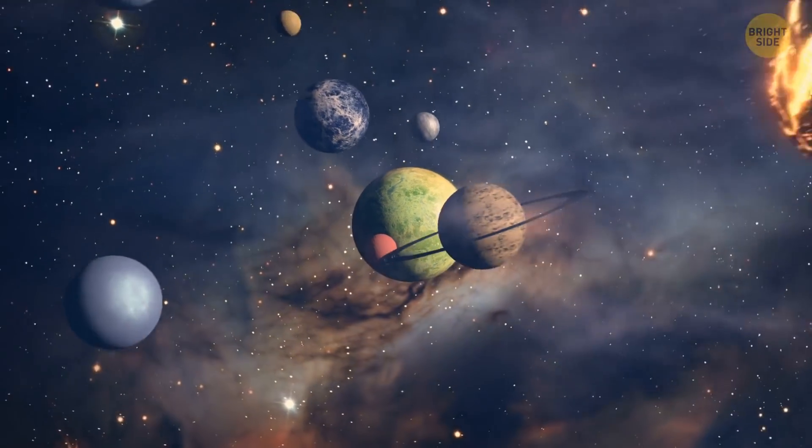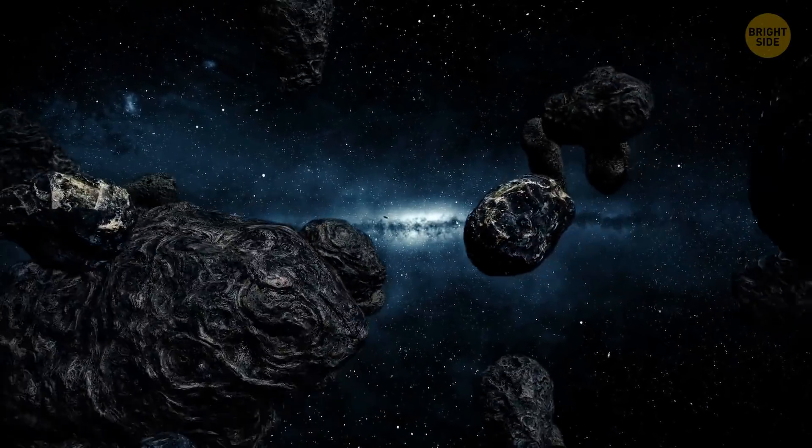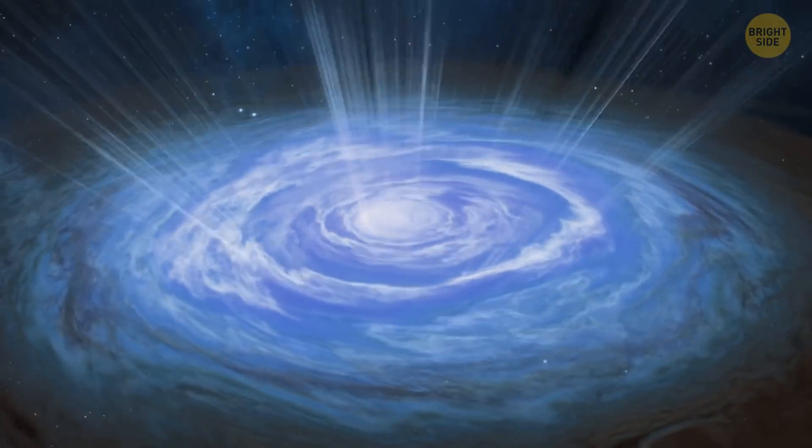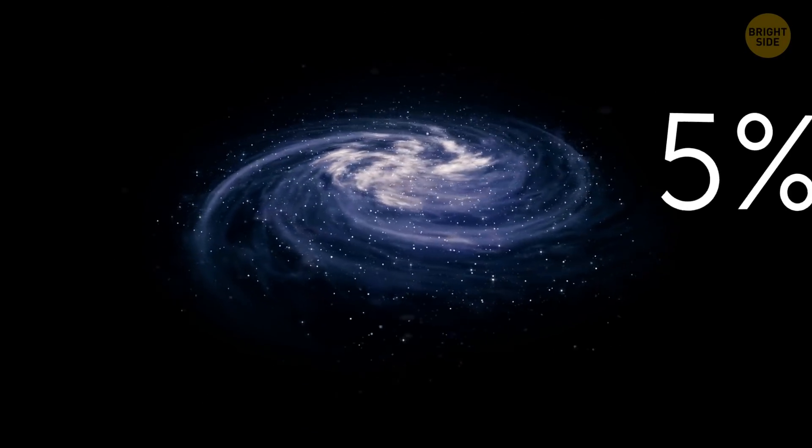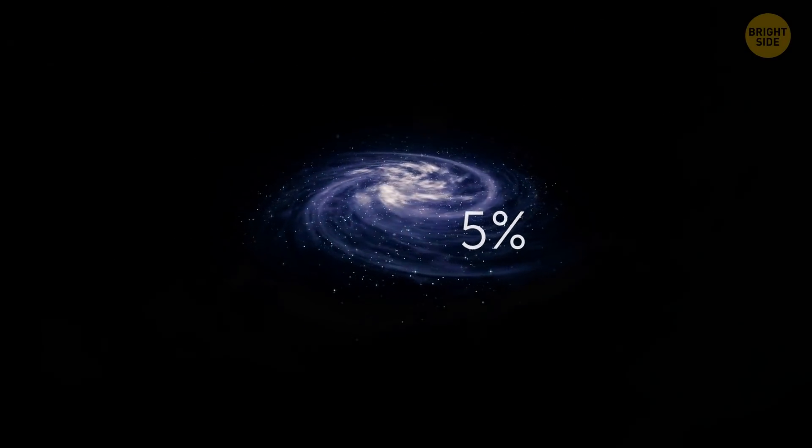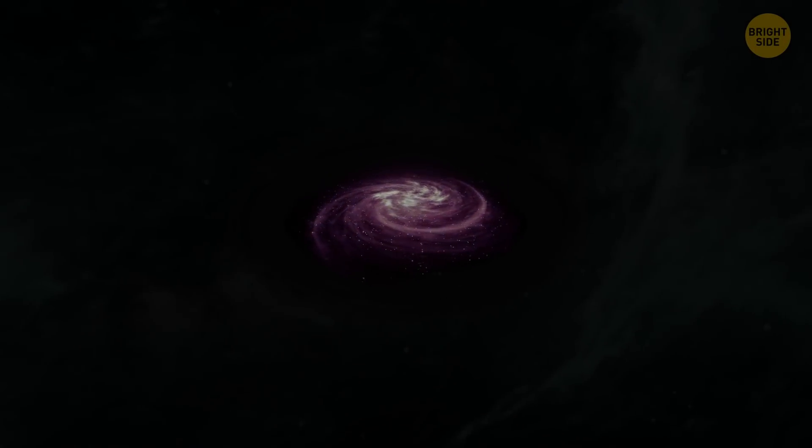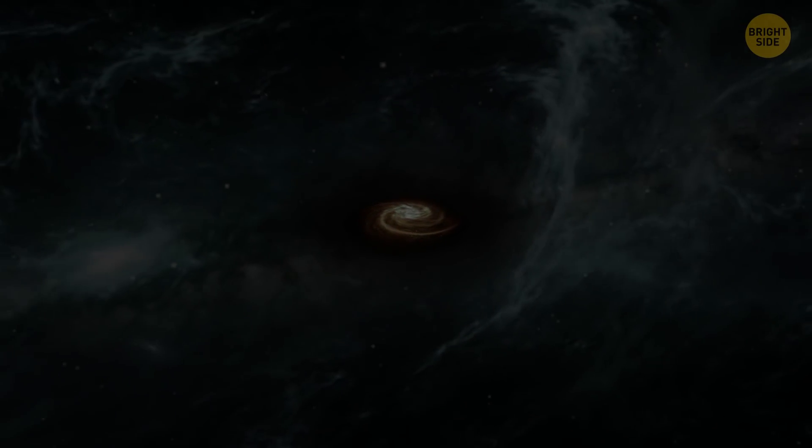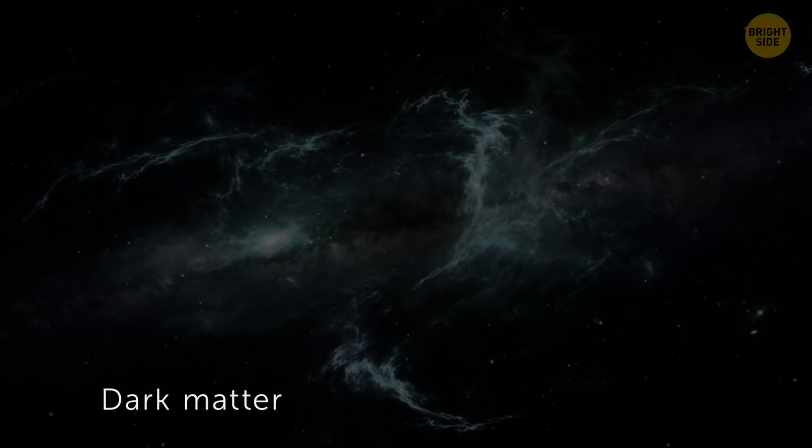Galaxies, planets, comets, asteroids, stars, space bodies are things we can actually see in space, but they make up less than 5% of the total universe. Dark matter, one of the biggest mysteries in space, is the name we use for all the mass in the universe that's still invisible to us.